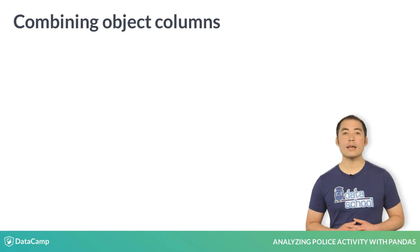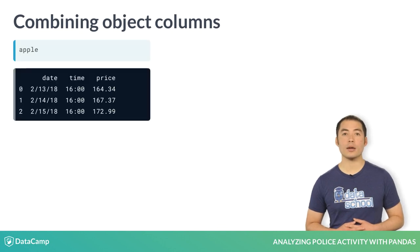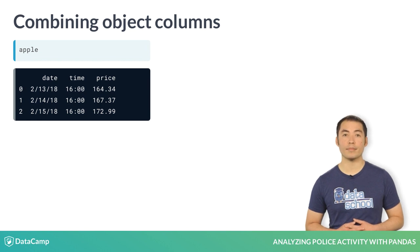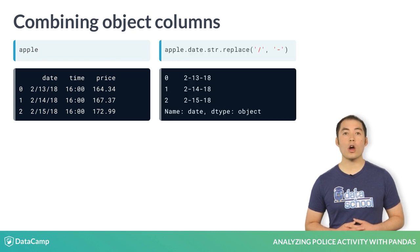Let's see an example of this using the Apple StockPrice data frame from the previous video. Date and time are stored in separate columns, so the first task is to combine these two columns using a string method. As you might remember from previous courses, string methods such as replace are series methods available via the str accessor.